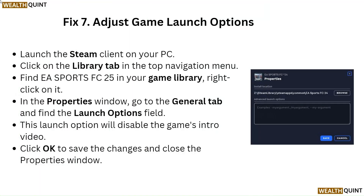Fix 7: Adjust game launch options. Launch the Steam client on your PC and click on the Library tab in the top navigation menu. Find EA Sports FC 25 in your game library, right-click on it. In the Properties window, go to the General tab and find the Launch Options field. This launch option will disable the game's intro video. Click OK to save the changes and close the Properties window.